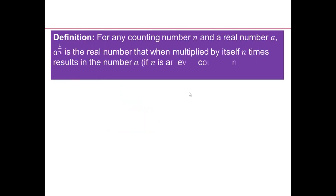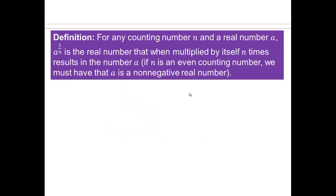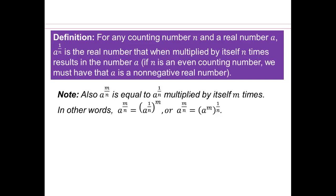All right, so we are defining that for any counting number n and a real number a, and we are looking at non-negative real numbers. Then a to the power 1 over n is a real number that, when multiplied by itself n times, results in the number a. You might be like, what? So if you feel like that, it's important to just look at an example. And we'll do that in a little bit.